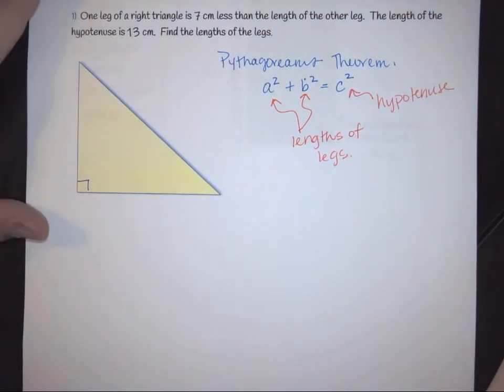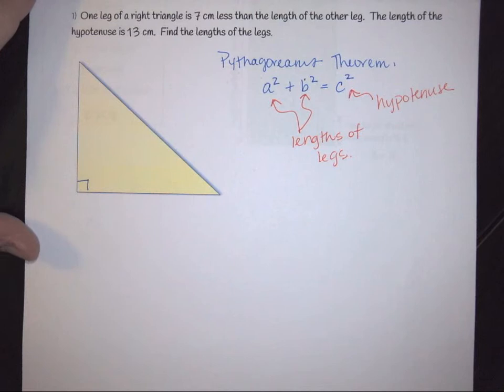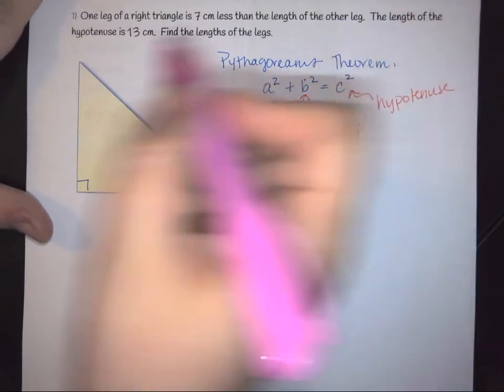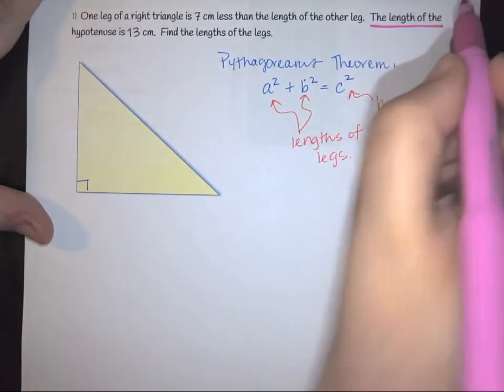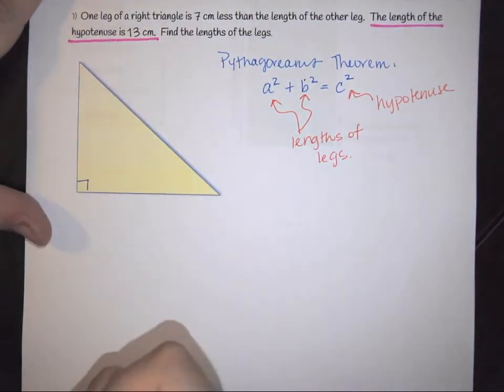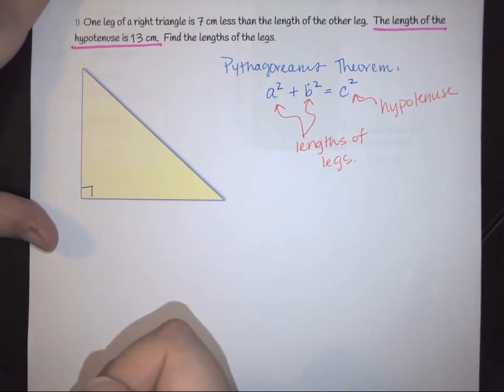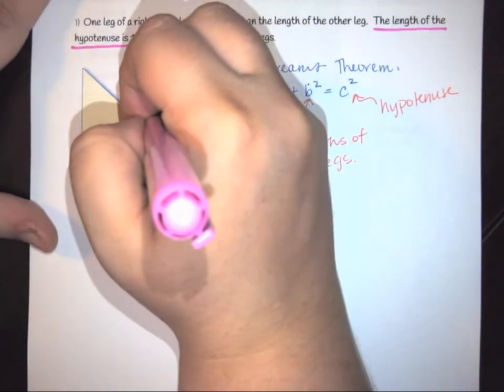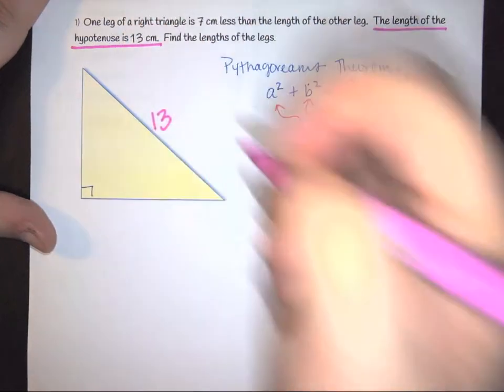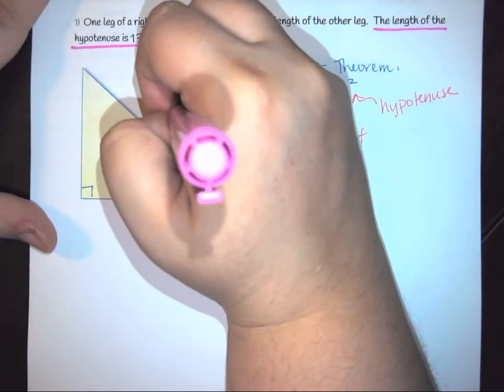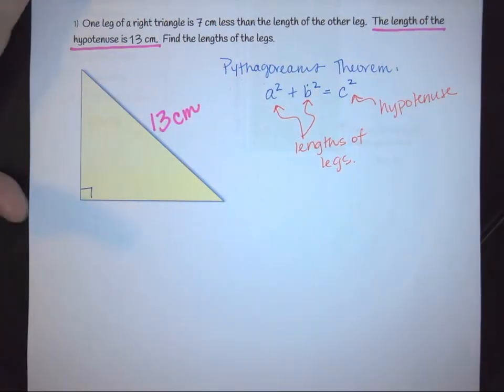And we know that a and b represent your lengths of the legs. Okay, those are the things that we know. So with this, we have to be able to input the information we've been given. Well, the first thing that we've been given is that we have been told that the length of the hypotenuse is 13 centimeters. And we know a hypotenuse is the longest side of a right triangle. So that tells us that this diagonal side right here is my 13 centimeters.